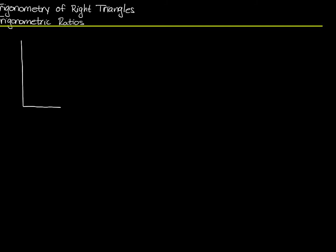So here's a right triangle. By way of reminder, you'll know a triangle is supposed to be a right triangle if there's a little square right in the corner that looks like a square corner. If that's provided, then you know that this triangle is supposed to be a right triangle, and you can make assumptions based on that — that this is a right angle.